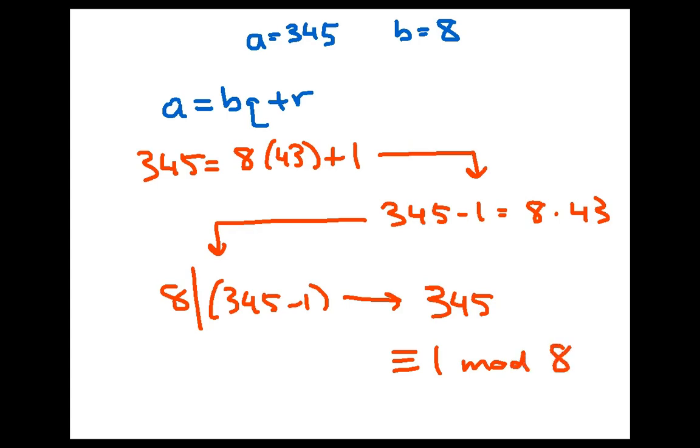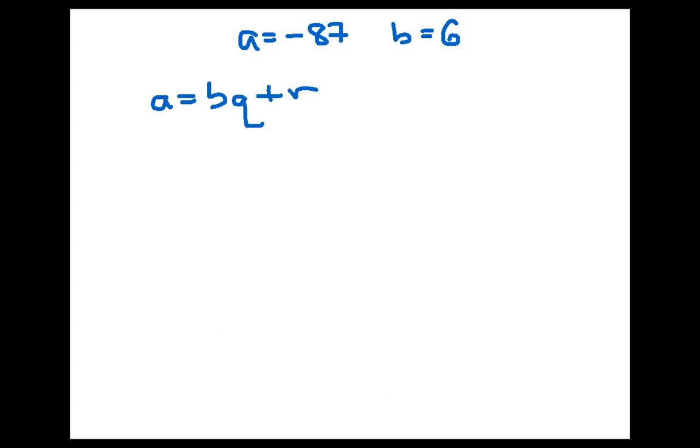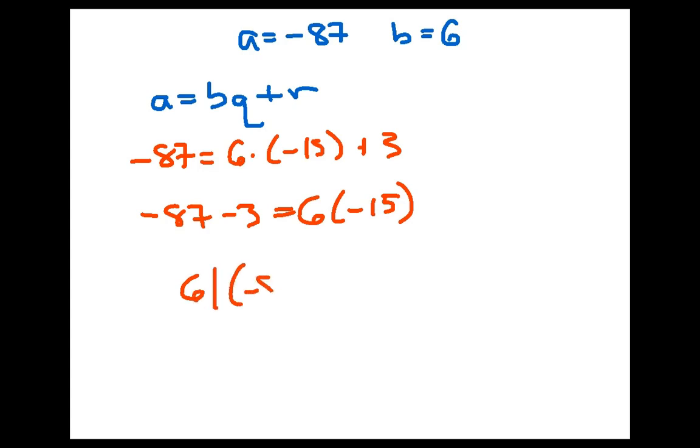So what the division algorithm is actually telling us is something about integer congruence, not just about divisibility. Let's go back to another example we saw in that first video, with a equal to negative 87 and b equal to 6. In that case, the division algorithm gave us negative 87 equals 6 times negative 15 plus 3. If we subtract the remainder from both sides, we get negative 87 minus 3 equals 6 times negative 16. And so negative 87 minus 3 is divisible by 6, and that means that negative 87 is congruent to 3 modulo 6.